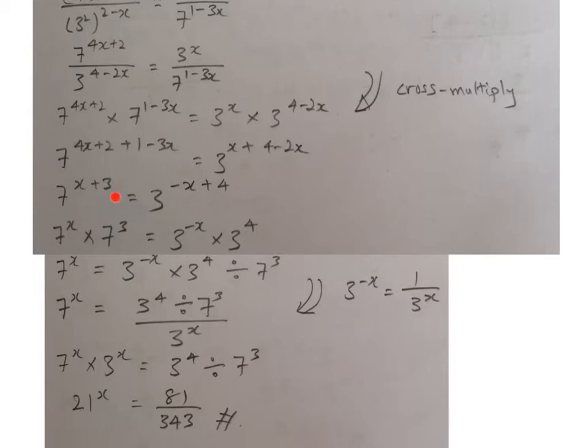Then I can now split it up again. 7 to the power of x plus 3, I can split it up to 7 to the power of x multiplied by 7 to the power of 3. Likewise, 3 to the power of negative x plus 4, I can split it up to 3 to the power of negative x multiplied by 3 to the power of 4.